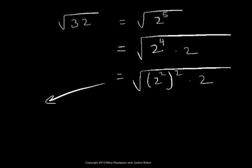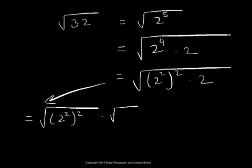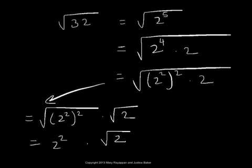Since the radicand is a product, we can split the radical upon those factors. So that would become square root of 2 squared, the whole square, times square root of 2. This is the square root of a perfect square, and that yields 2 to the power 2, which is simply the base under that perfect square. That times square root of 2 stays as it is, because the radicand 2 is not a perfect square and cannot be factored any further.